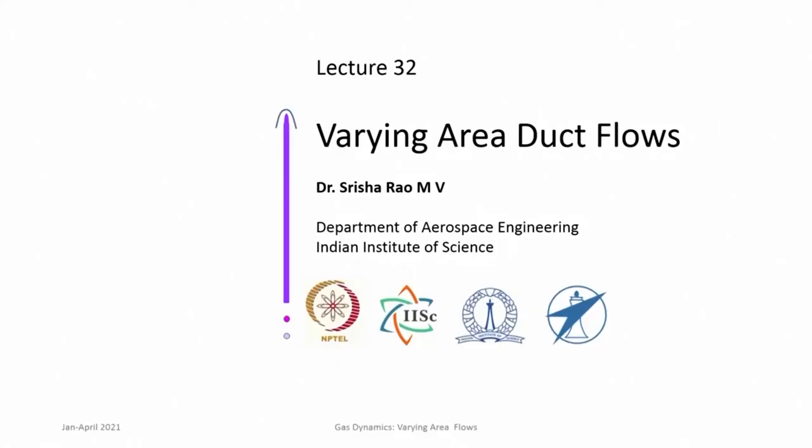So a supersonic diffuser implies a convergent duct. Similarly, if you increase area with an incoming supersonic flow, then velocity increases — it behaves like a nozzle. So a divergent duct is a supersonic nozzle. This behavior must always be kept in mind when discussing varying area ducts.